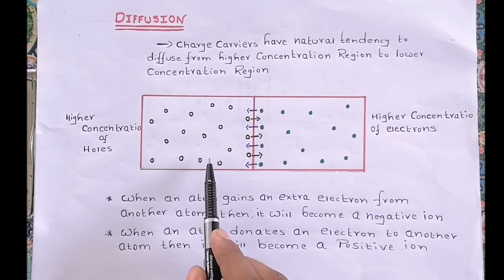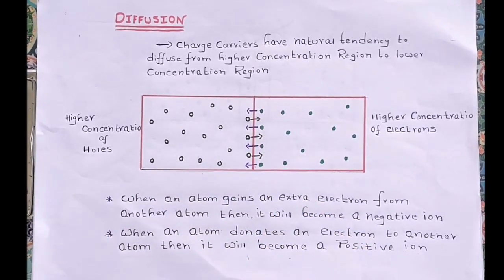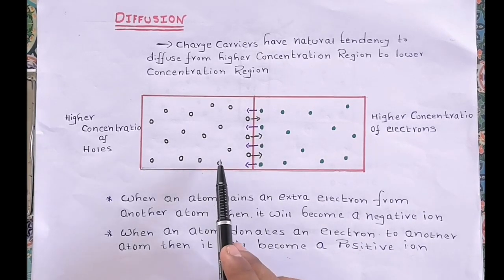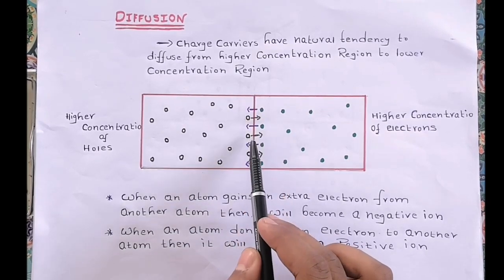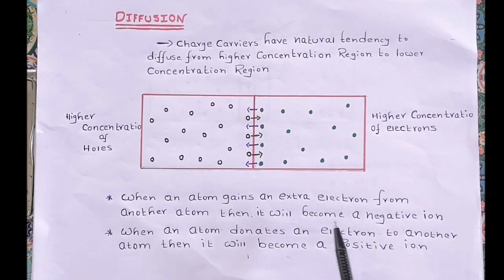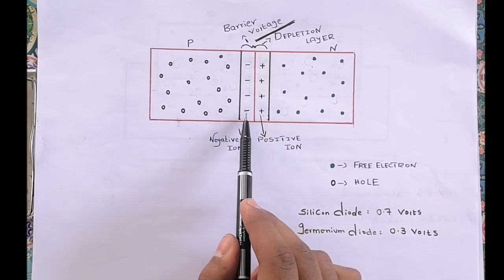When these electrons jump from n-type to p-type, positively charged ions are formed, because these atoms lose or donate an electron. When an atom loses its extra electron, it is converted into a positive ion. Similarly, on the p-side, if a hole gains an extra electron, that atom gains one electron and gets converted into a negative ion.